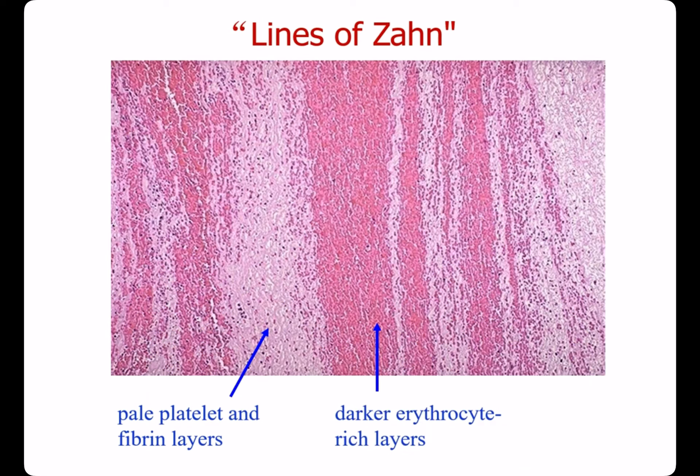Here also shows lamination. Lamination represents pale platelets and fibrin layers alternating with darker erythrocyte-rich layers.